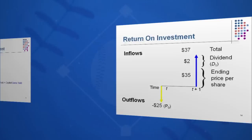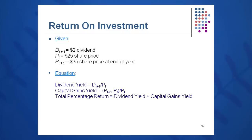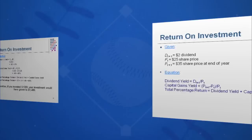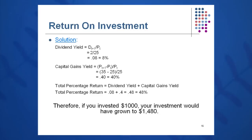We calculate total percentage return by putting together the two pieces: dividend yield plus capital gains yield. Dividend yield is $2 over the initial price of $25, or 8% — a nice rich 8% dividend on this stock. Capital gains yield is P1 minus P0 over P0: $35 minus $25 over $25, giving a 40% capital gains yield — a fabulous return. Total return is dividend yield plus capital gains yield: 48%. So if you invested $1,000, your investment grew to $1,480. People get much more excited hearing '48% return' than '$480 gain' — so returns are typically expressed as percentages.